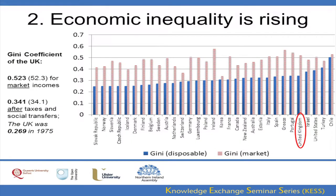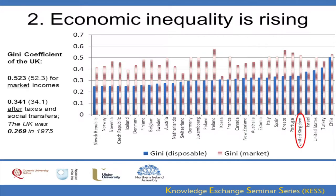Looking first at the Gini coefficient, economic inequality is increasing across the western world. In 2013, the Gini coefficient for the UK was 0.523 — or 52.3 — for market incomes, that is incomes from all forms of market activity: employment, rental income, dividends and so on. The Gini coefficient was significantly lower at 34.1 when the effect of taxes and social transfers like pensions and other welfare payments are taken into account. In 1975, the Gini coefficient for the UK was 26.9.